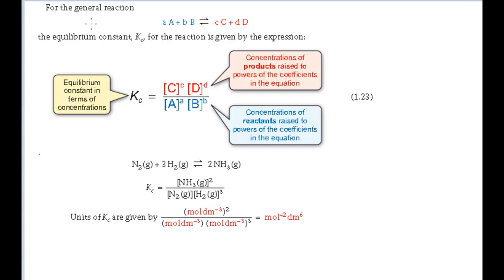For a general reaction A plus B goes to C plus D, the equilibrium constant Kc equals the concentration of product C raised to the power small c — its stoichiometric coefficient in the balanced equation — multiplied by the concentration of product D raised to small d, its coefficient in the equation. So products are on the top. These concentrations are divided by the concentration of reactant A raised to the power small a, multiplied by the concentration of reactant B raised to the power small b. So reactants are on the bottom.